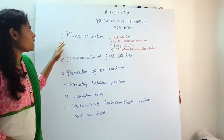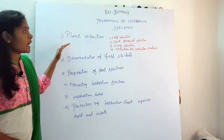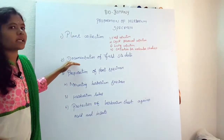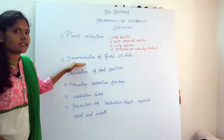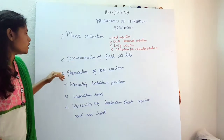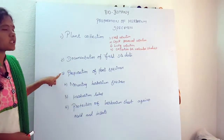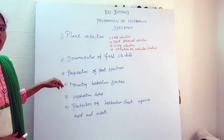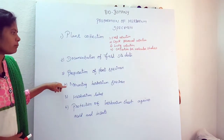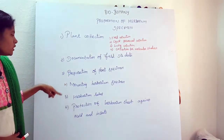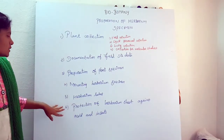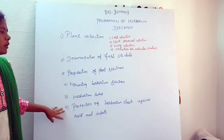The first step is plant collection. Second, documentation of field site data. Third, preparation of plant specimen. Fourth, mounting herbarium specimen. Fifth, herbarium labels. Sixth, production of herbarium specimen.